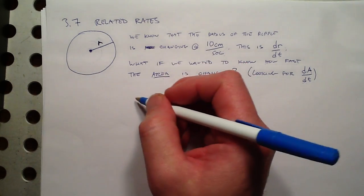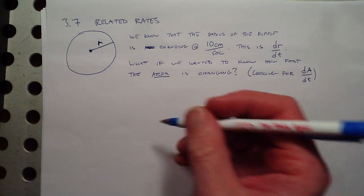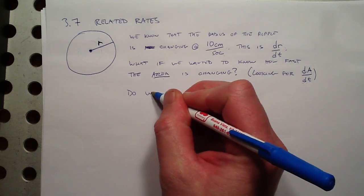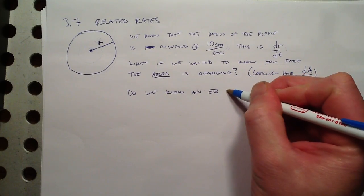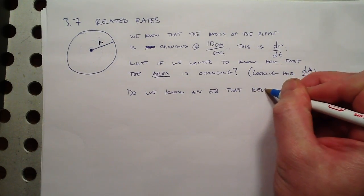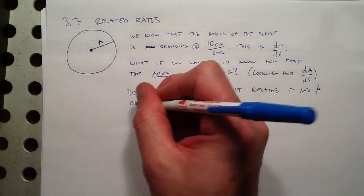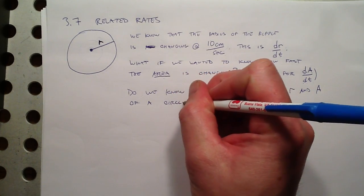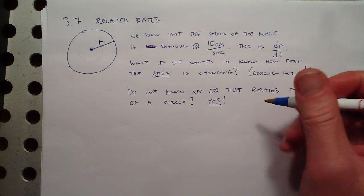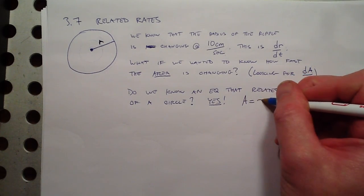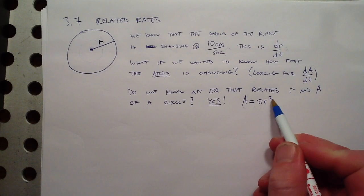To do a related rates problem, we need to find an equation that relates the variables we're interested in. I'm interested in the radius of a circle and the area of a circle. Do we know an equation that relates radius and area? Of course: the area of a circle equals pi r squared. That's the relationship — the area of a circle is equal to pi times the radius squared.